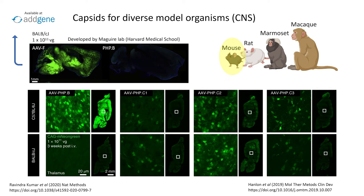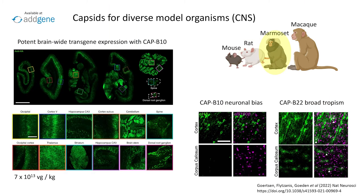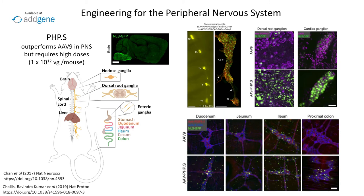PHP-EB also works across diverse strains of rats, though with slightly reduced potency compared to mice, so higher doses are necessary. CAP-B10 is exciting in part because the neuronal bias and peripheral detargeting observed in mice still holds true in marmoset non-human primates. For broader brain tropism, another variant, CAP-B22, is now available. In neonate rhesus macaque, a new AAV called CAP-MAC shows increased potency compared to AAV9 after systemic injection and, unlike AAV9, is highly specific to neurons. Though CAP-MAC delivers transgene brain-wide, potency is especially high in the cerebellum.